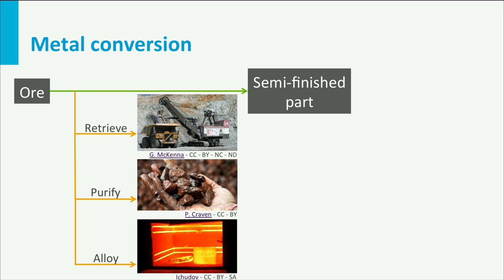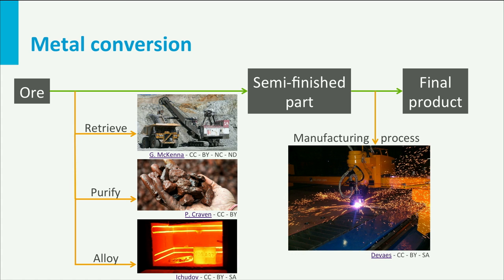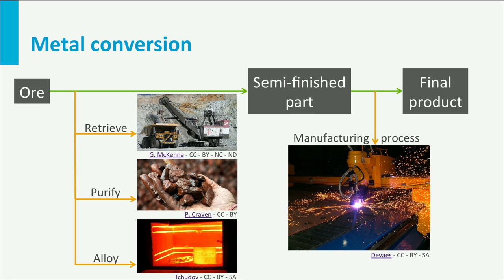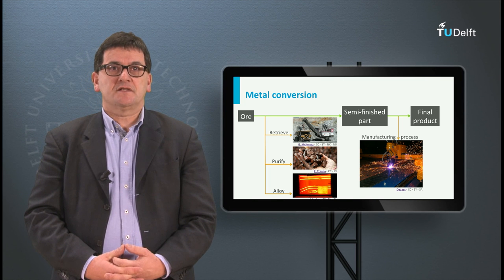When the metal alloy has the right composition, the material can be cooled down. Often a number of casting and rolling processes are performed on the metal alloy. These processes shape the metal alloy into semi-finished parts like sheets, plates, and billets. The next step is to transform these semi-finished products into final products by manufacturing processes, which will be explained later.